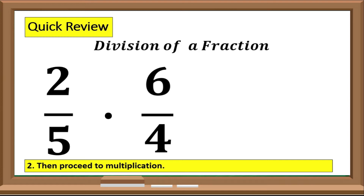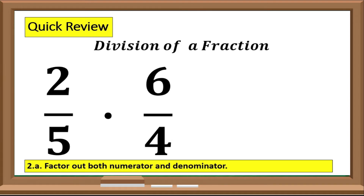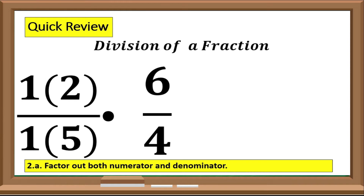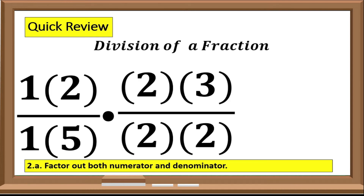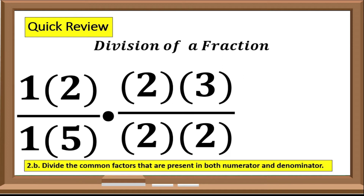Next, we need to factor out both numerator and denominator. In this case, the factors of 2 in the numerator is 1 times 2, and the factors of 5 in the denominator is 1 times 5. And for the fraction 6 over 4, we have for the factors of 6: 2 times 3, and for the factors of 4: 2 times 2. Next, divide the common factors that are present in both numerator and denominator.